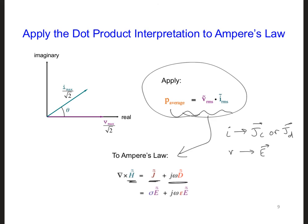First, write out the dot product of the conduction current and the electric field, and examine whether they share an in-phase component.